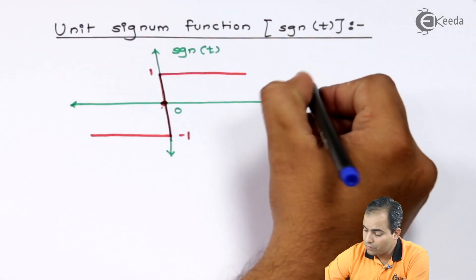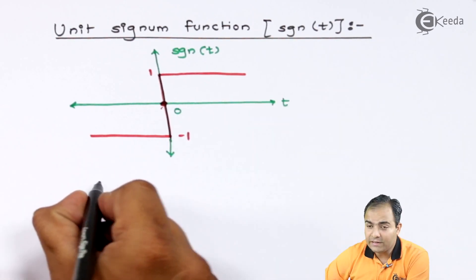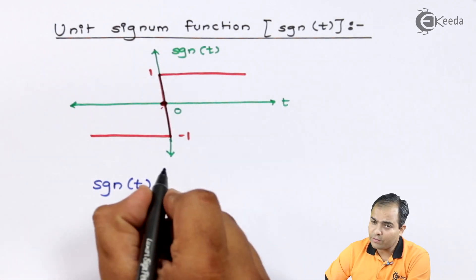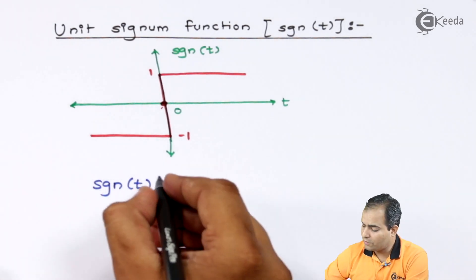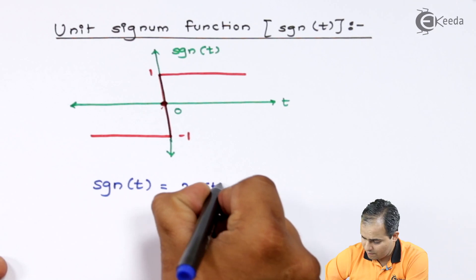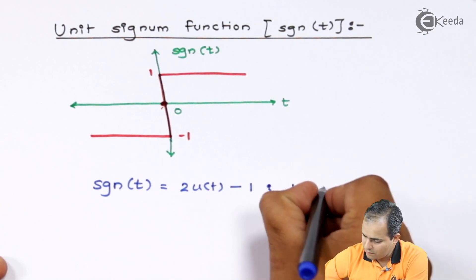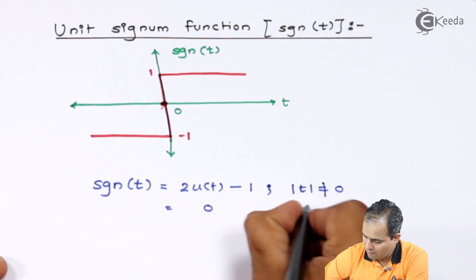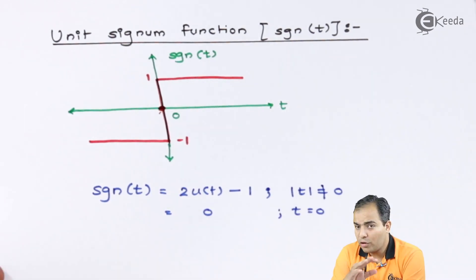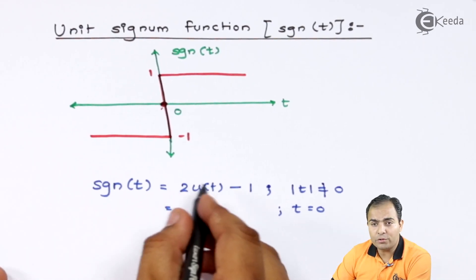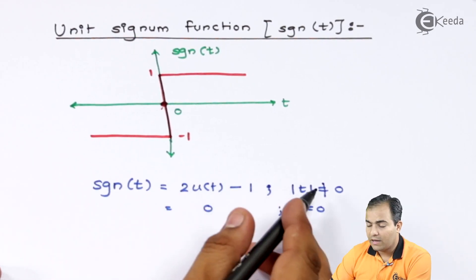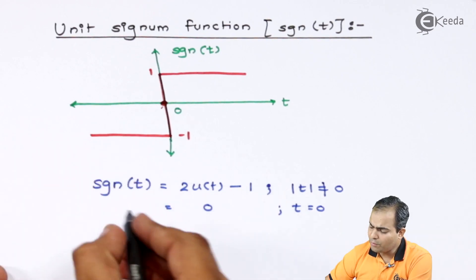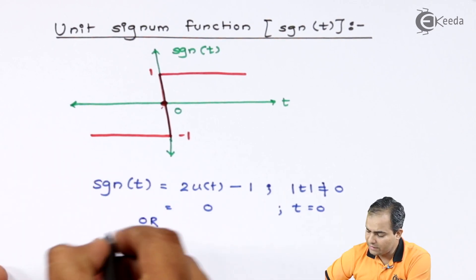This signum function is represented by sgn. You can write this equation in two ways. First of all, for mod of t not equals to 0, this function is represented by 2u(t) minus 1. And for t equals to 0 this amplitude is 0.